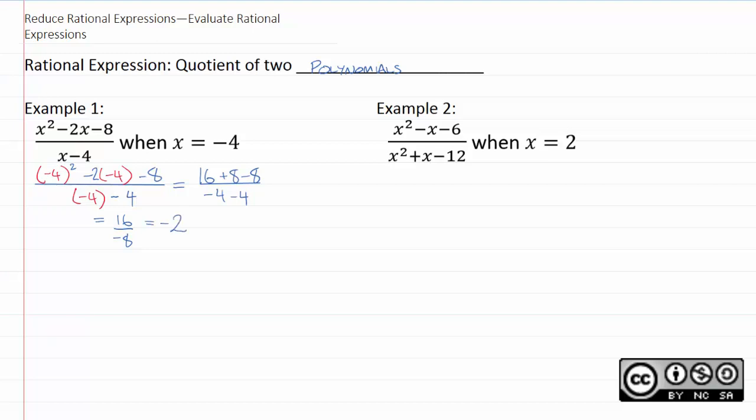Example two works the same way. We're just going to place two wherever x appears. So two goes in the four spots where we see an x. So we'll have two squared minus two minus six, two squared plus two minus 12.